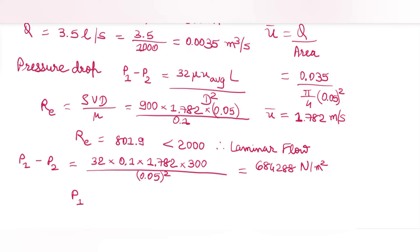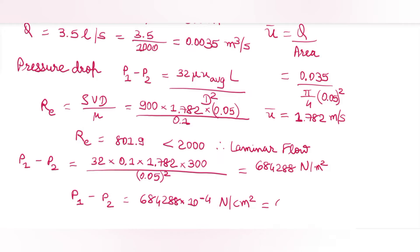Converting to Newton per centimeter square by multiplying by 10⁻⁴: 684288 × 10⁻⁴ = 68.43 Newton per centimeter square.